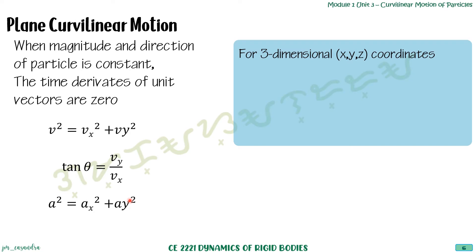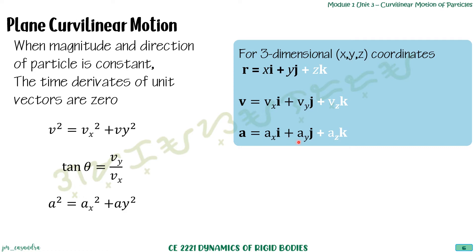For three-dimensional curvilinear motion in x, y, z coordinates, we have almost the same equations. Position: R = xi + yj + zk. Velocity: V = vxi + vyj + vzk. Acceleration: a = axi + ayj + azk. For two dimensions, the z-values are excluded; for three dimensions, z-values are included.